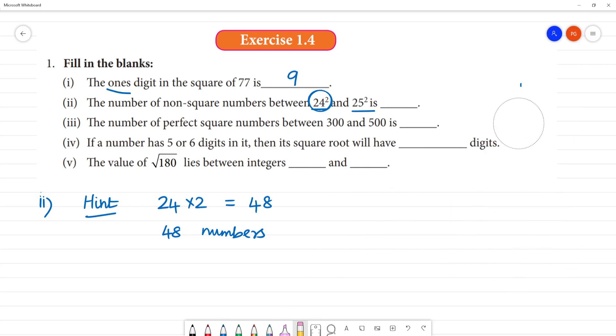Let me show with a small number. For example, 3 square and 4 square. Non-square numbers, that is not a perfect square. 3 into 2 is equal to 6 numbers. So we will verify: 3 square is 9, 4 square is 16. Between 9 and 16 are 10, 11, 12, 13, 14, 15. So there are 6 numbers. 3 multiplied by 2 is 6. That is the hint. So the answer is 48 numbers. 24 multiplied by 2.